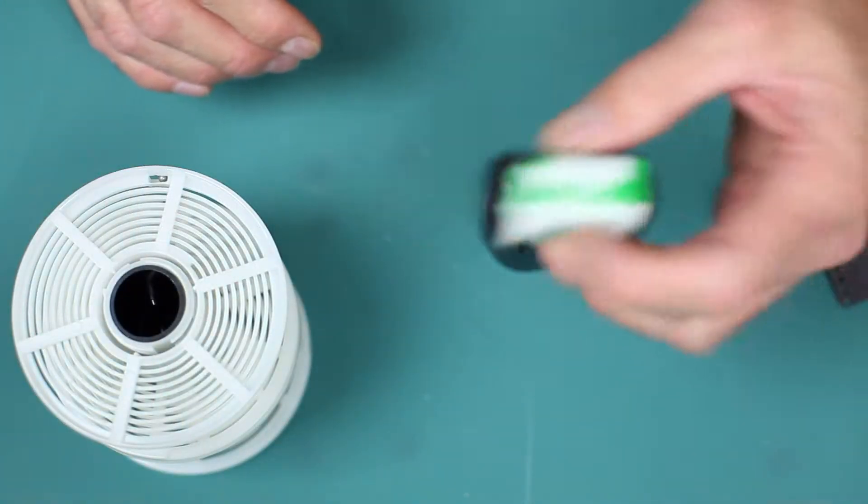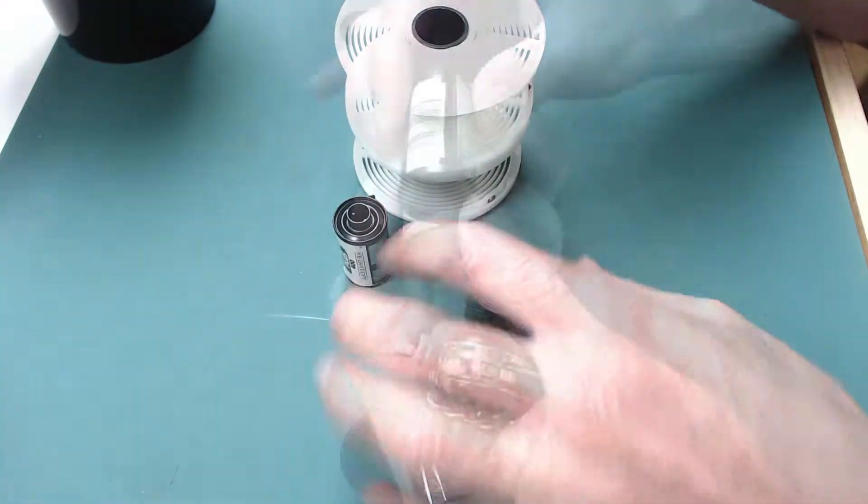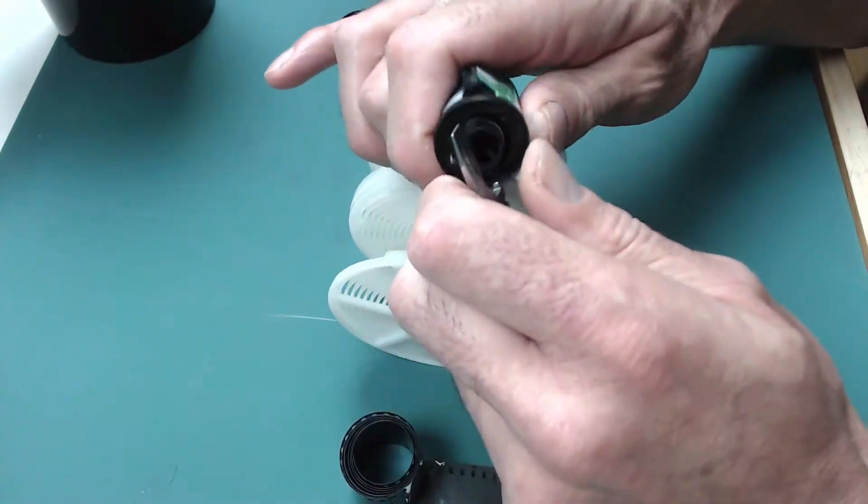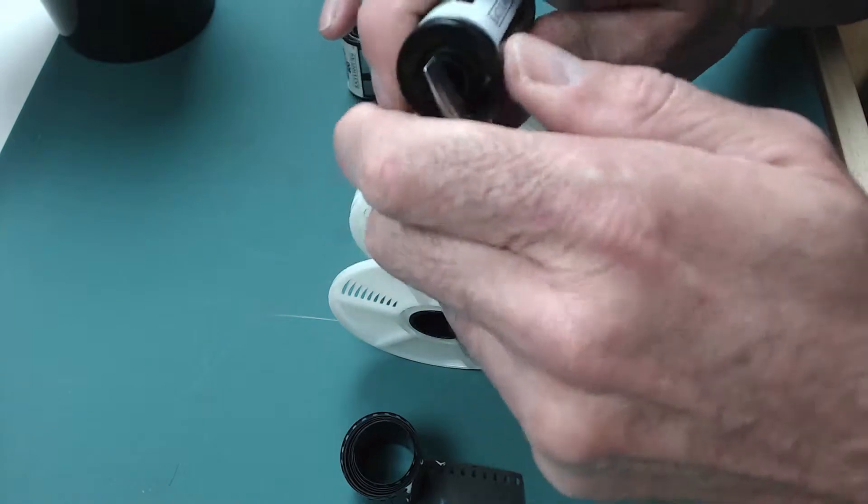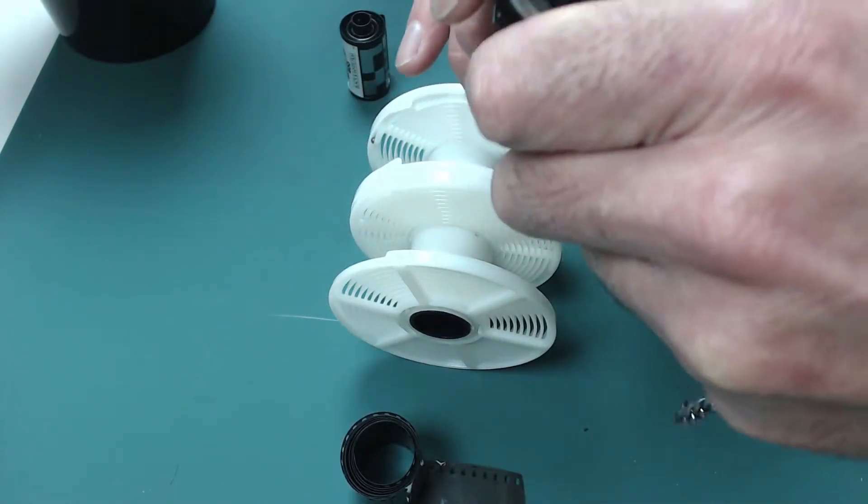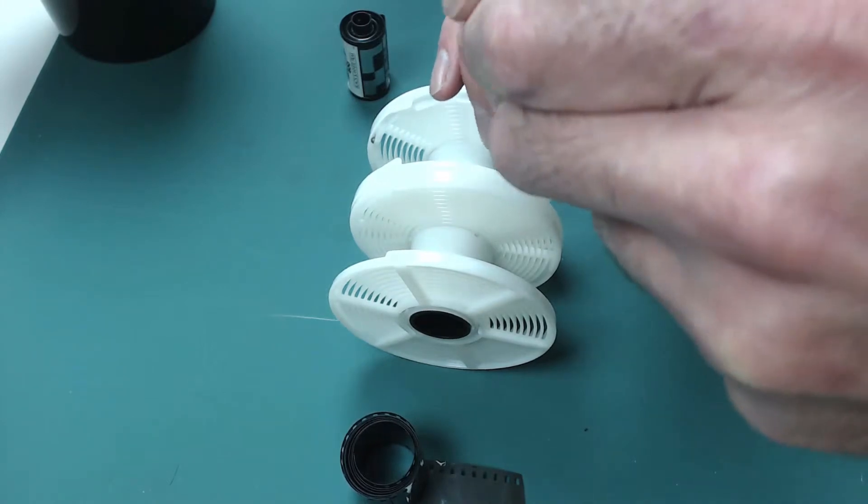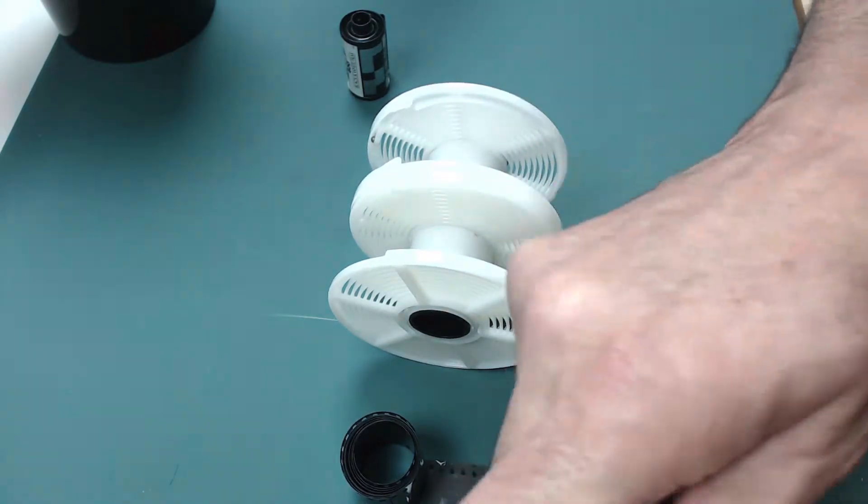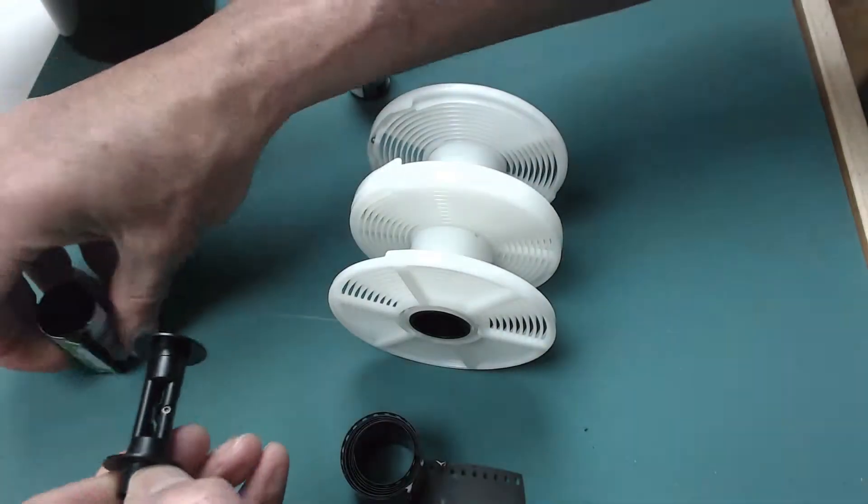To get the film out of the cassette and onto the spiral, prise open the top of the cassette with a bottle opener. Whilst this is an empty cassette, there is no film inside here, so you get the idea.